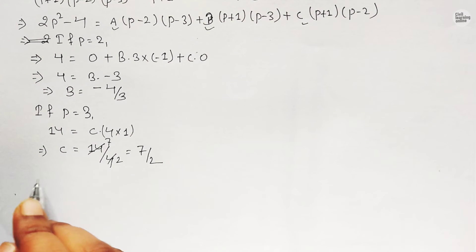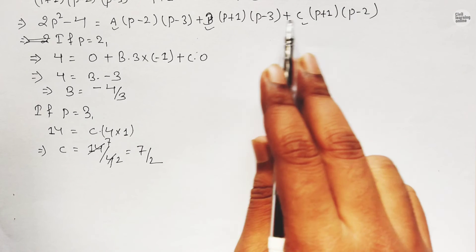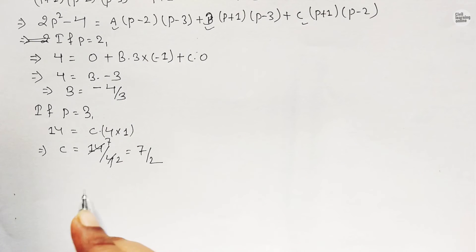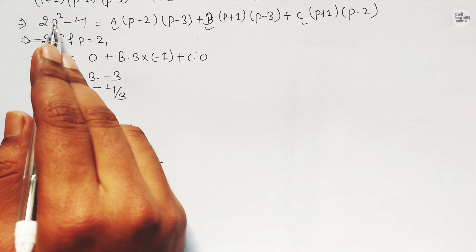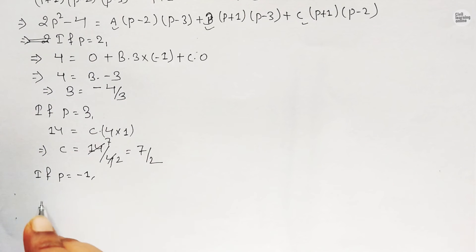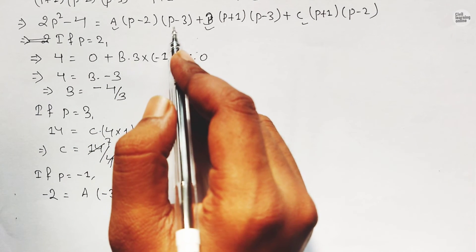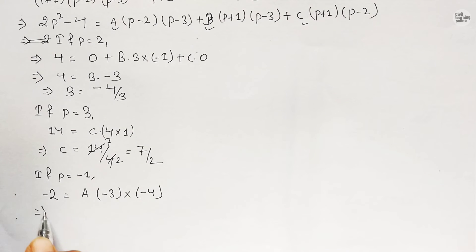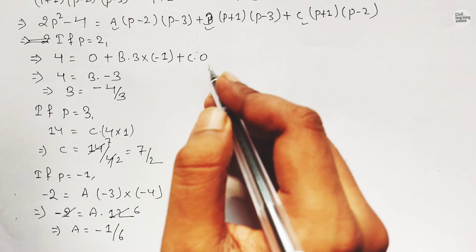To find A, we take p = -1. On the LHS: 2(-1)² - 4 = 2 - 4 = -2. The A term gives A(-1 - 2)(-1 - 3) = A(-3)(-4) = 12A. Wait — re-checking: A(-3)(-4) gives -2 = 12A, so A = -1/6.